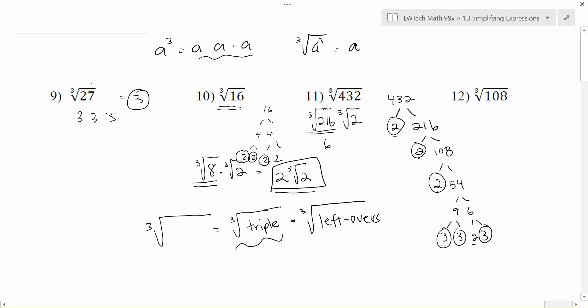And so that will end up being 6. If you do 6 times 6 times 6, you get 216. And then I have the cube root of 2 as my leftover. And so that would be the most simplified form of the cube root of 432.